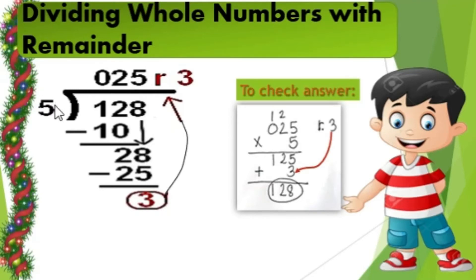5 multiplied by 5 equals 25, and 28 minus 25 equals 3. Since 3 cannot be divided by 5, 3 is our remainder. To check the answer, use your quotient multiplied by the divisor.